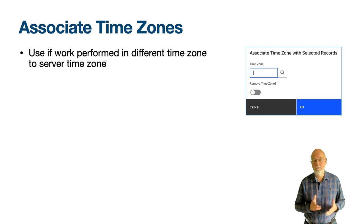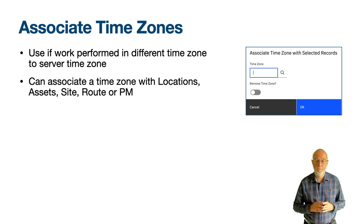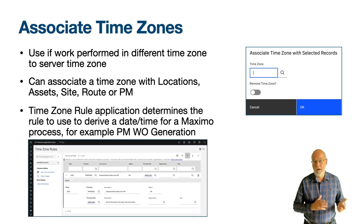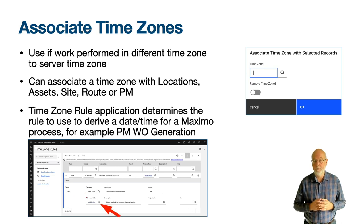This same dialog will also be found from the list tabs of the routes and preventive maintenance applications, and a similar dialog will be found in the organisations application on the sites table window. The time zones associated with a location, asset, site or route are used by a time zone rule and a process — there is one called PMWOgen. The associated process rule determines the order in which the fields are searched to derive a time zone to apply during work order generation.